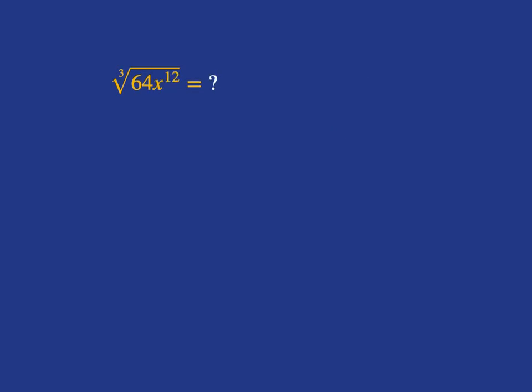Now let's throw in some algebra. So if we want to do what's the cube root of 64x to the power of 12, we're asking what multiplied by itself multiplied by itself gives you the answer of 64x to the power of 12. Well, we already know that we're going to have 4, because 4 times 4 times 4 is going to give you the 64.